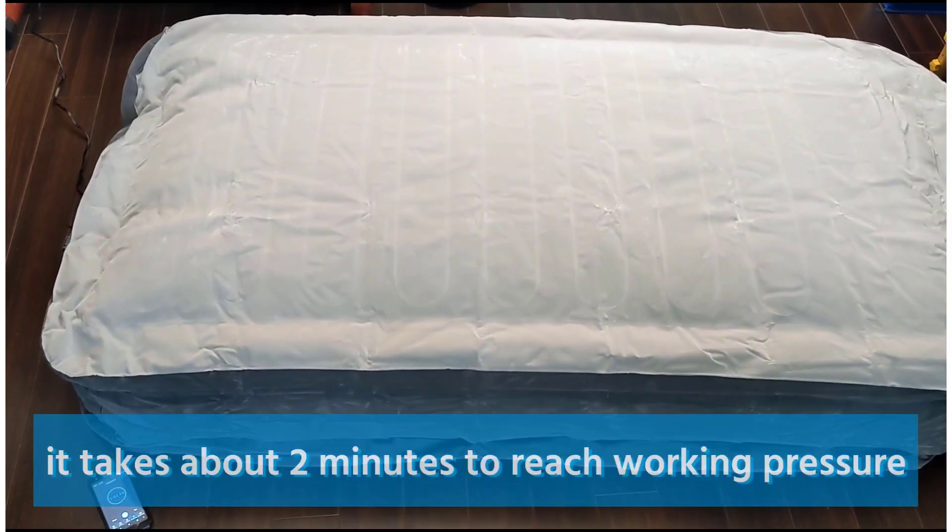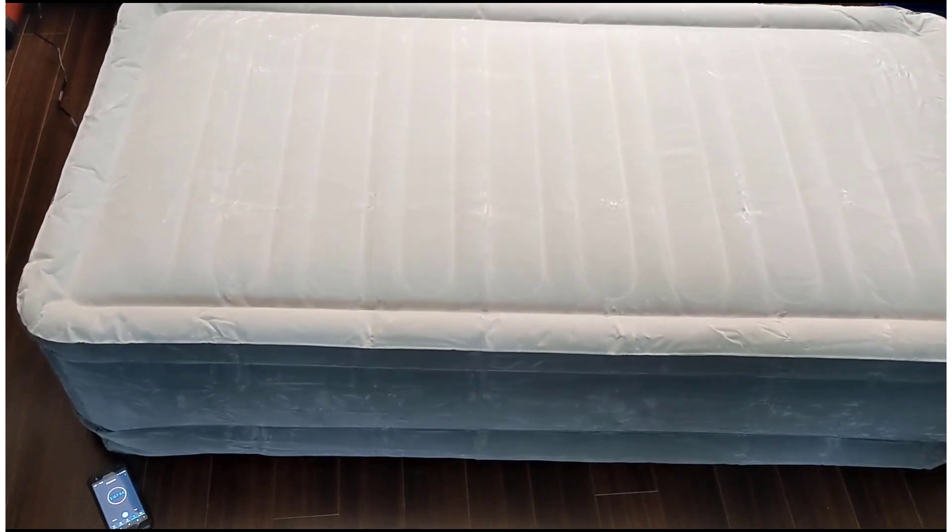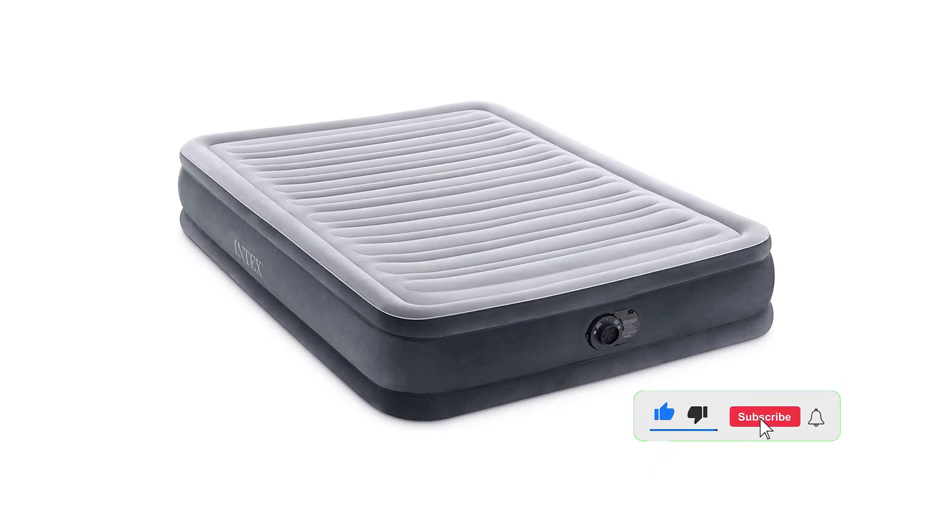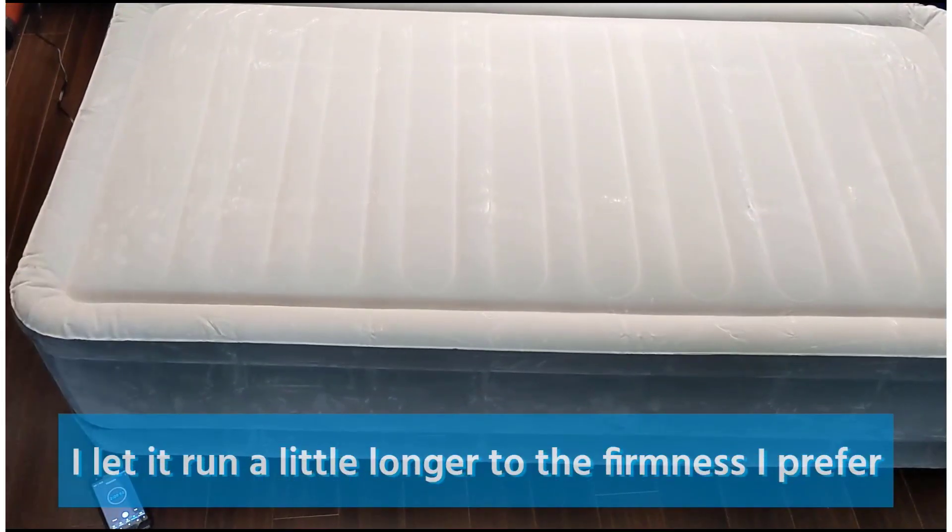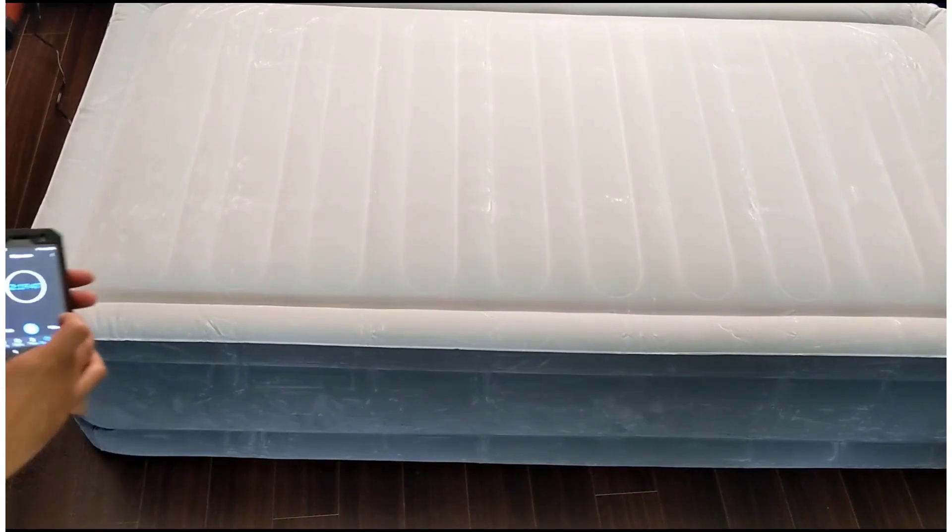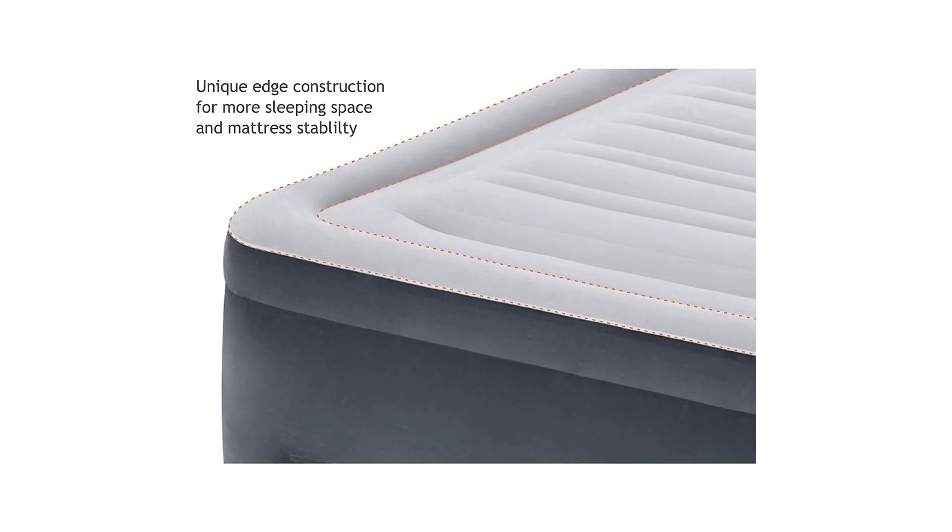Number 5: Intex Dura-Beam Deluxe Comfort Plush Mid-Rise Air Mattress. A less expensive option that has similar comfort features is the Comfort Dura-Beam by Intex. This one is available in twin, full, and queen sizes and three heights: 13 inches, 18 inches, and 22 inches, though not all sizes are available in all three heights. If you or one of your guests has mobility issues and want a tall air mattress that makes it easier to get in and out of bed, note that the Intex's 22-inch height option is the tallest one on this list, but it is only available in a queen size.